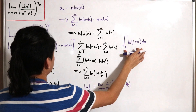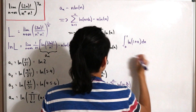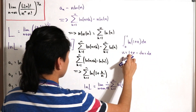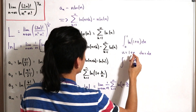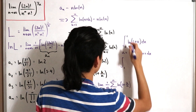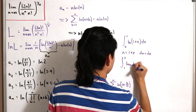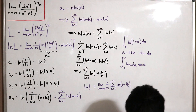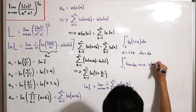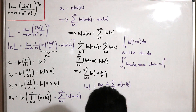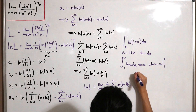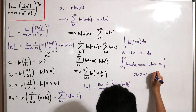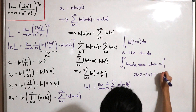Evaluating this integral is straightforward using u-substitution: let u = 1+x, so du = dx. The bounds change from 1 to 2, giving the integral from 1 to 2 of ln(u) du. Applying integration by parts yields [u·ln(u) − u] evaluated from 1 to 2, which gives (2·ln(2) − 2) − (0 − 1) = 2·ln(2) − 1.